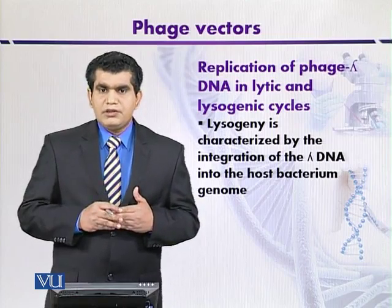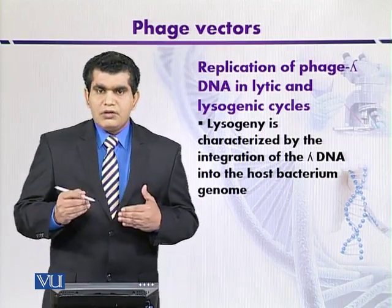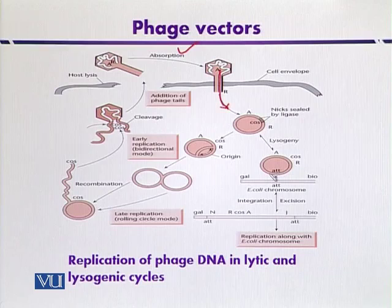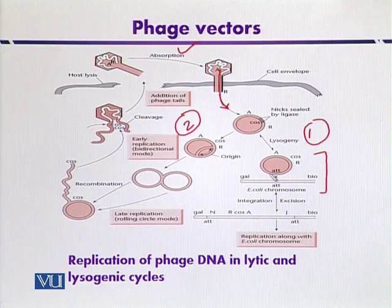After infection of the lambda genome to the host organism, we can discuss the situation in the form of a diagram. After adsorption to the bacterial cell wall and injection of the lambda genome, there are two possibilities: first, it will enter into lysogeny, and second, it will enter into the lytic cycle. In the case of lysogeny, prophage formation occurs after integration of the lambda genome into the host organism between the gal and bio regions.